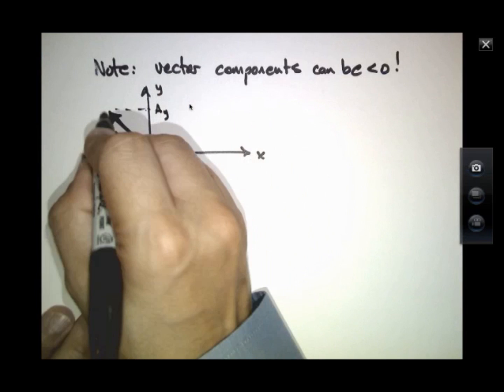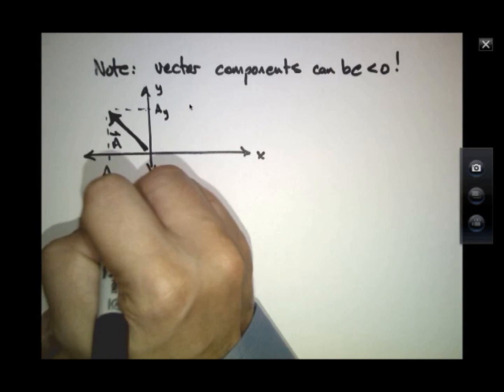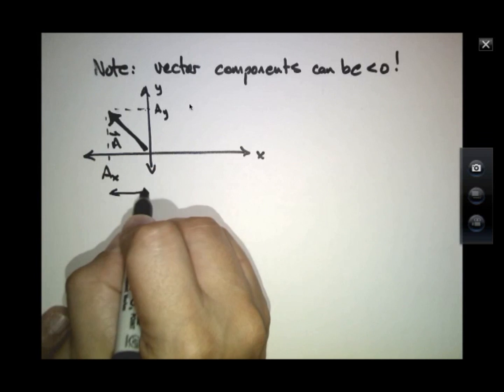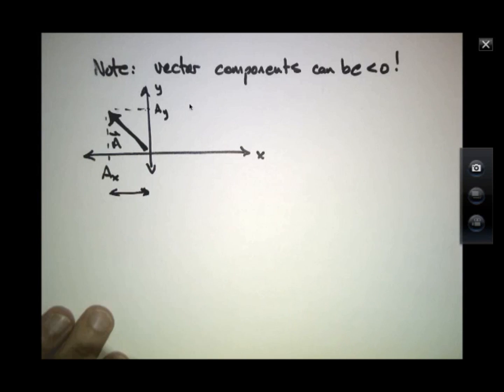AY is right here, but AX is over here. Along the X axis, that's AX, and it's in the negative X direction.